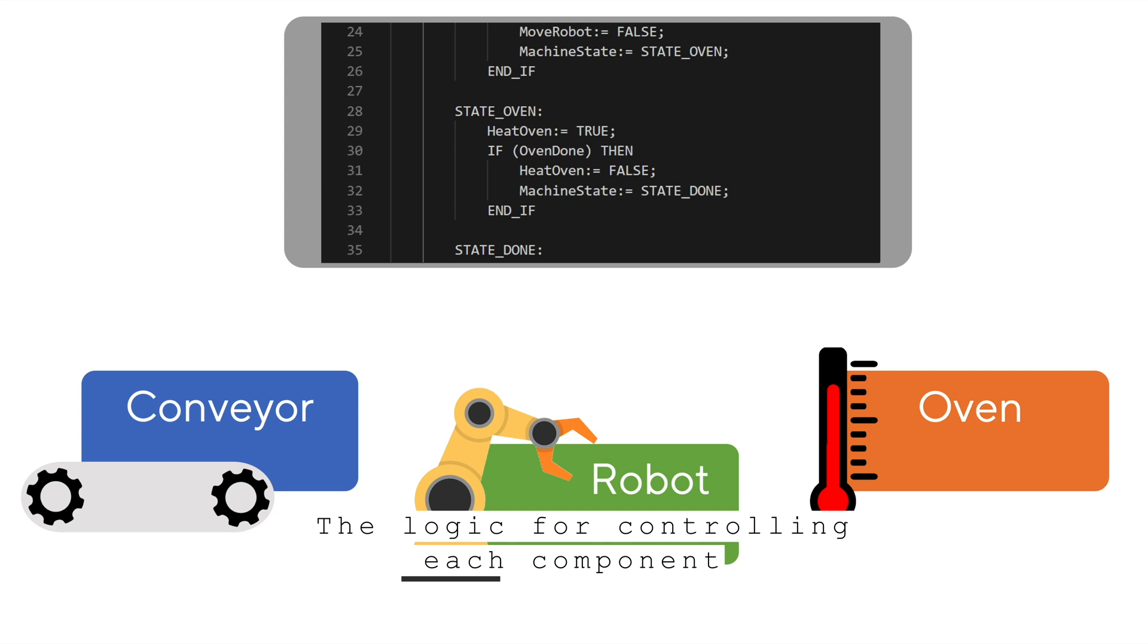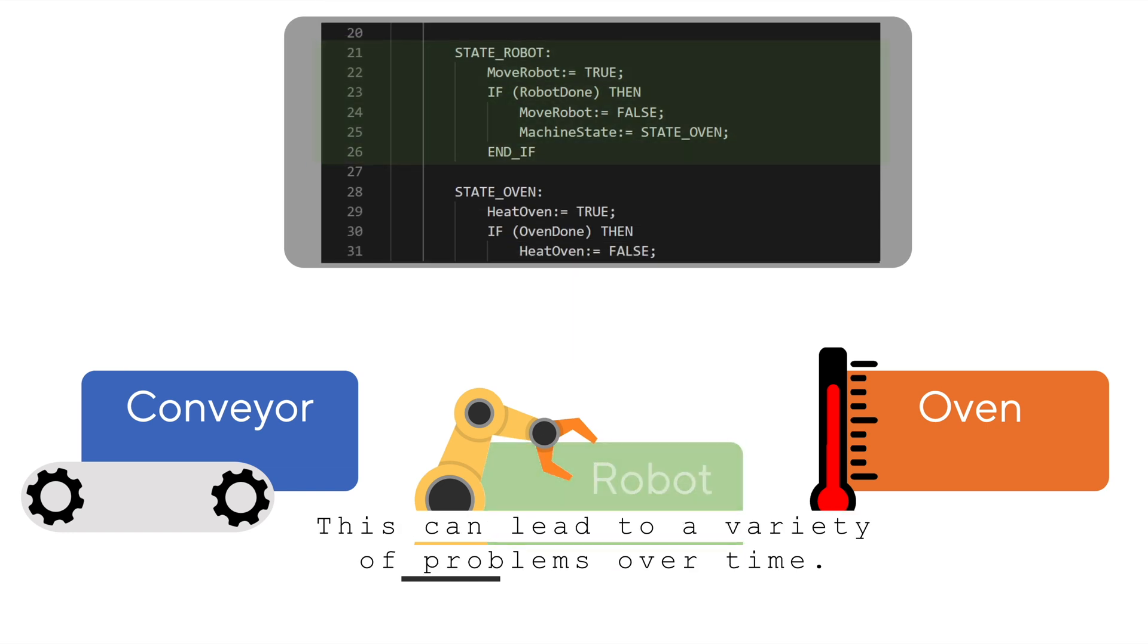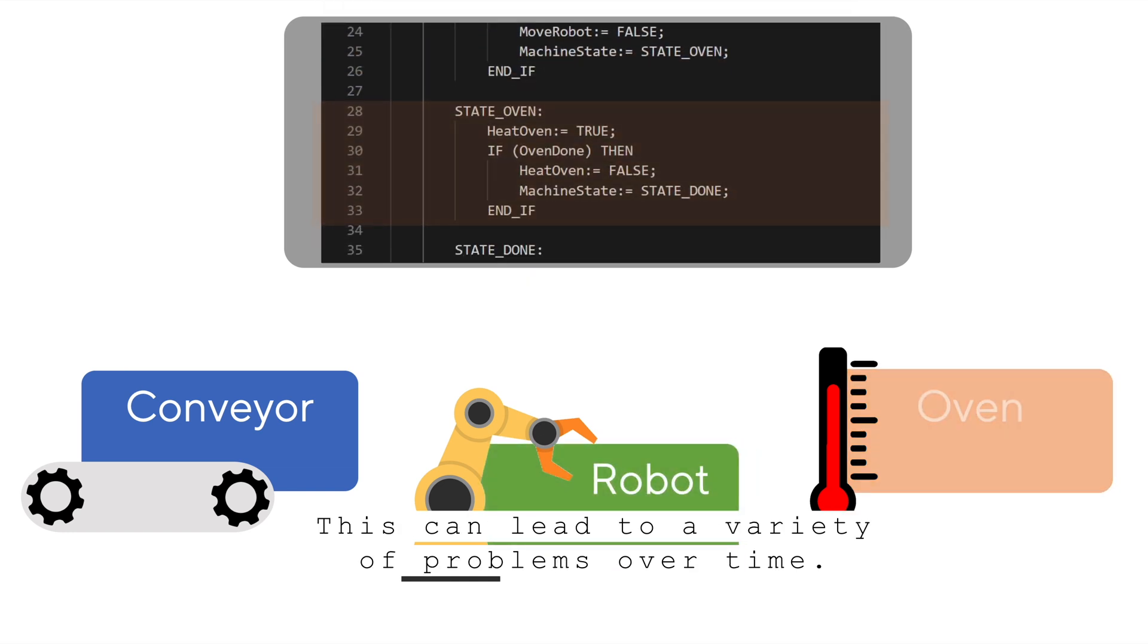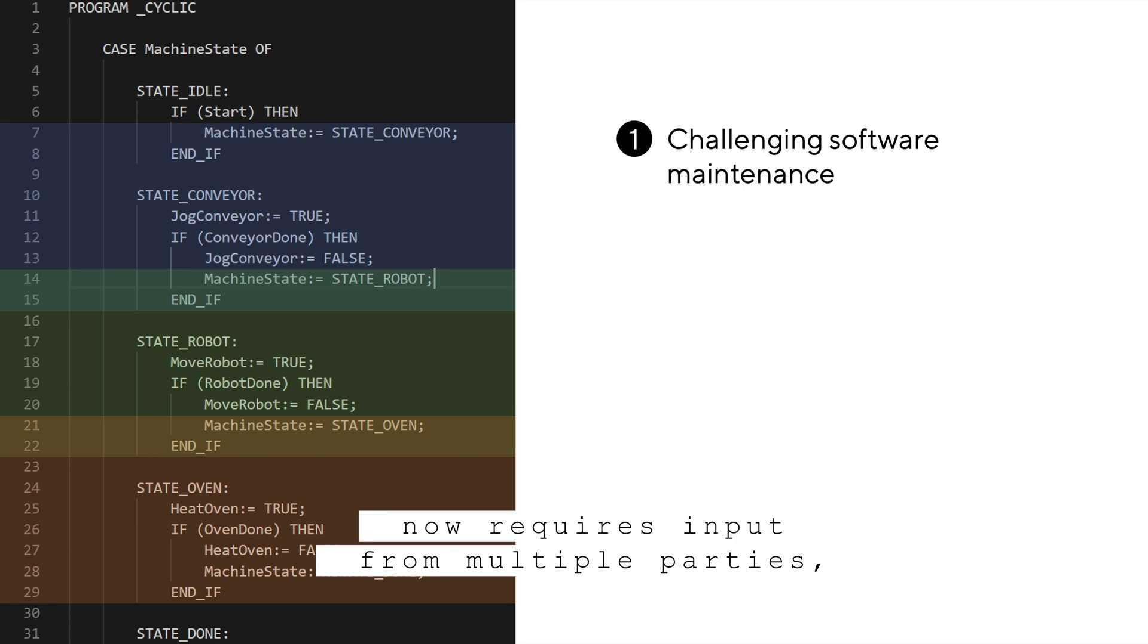The logic for controlling each component is effectively distributed between that component and the machine manager. This can lead to a variety of problems over time. First of all, software maintenance now requires input from multiple parties, since the machine manager is a monolithic chunk of code that contains overlapping logic from different components.